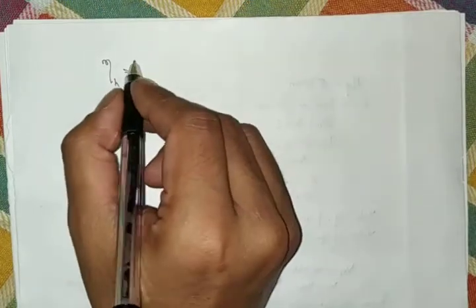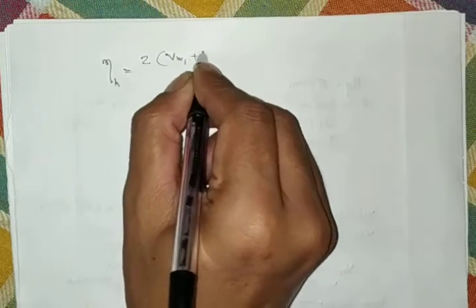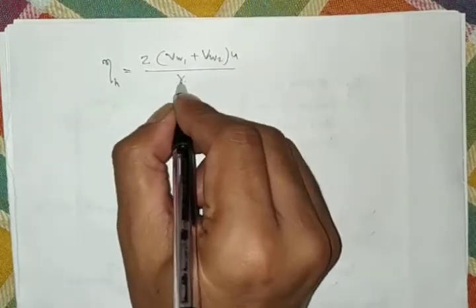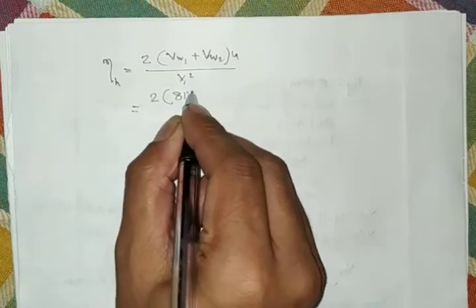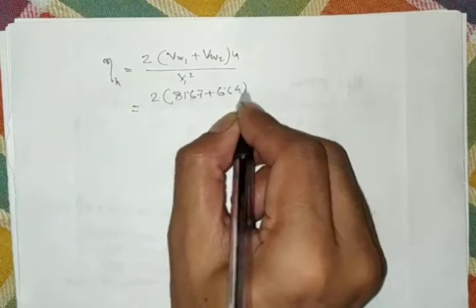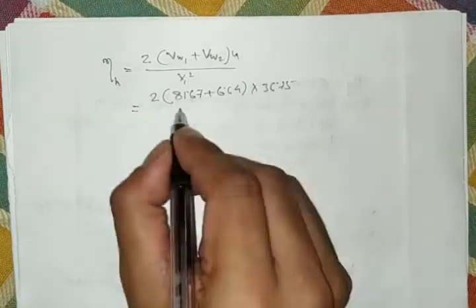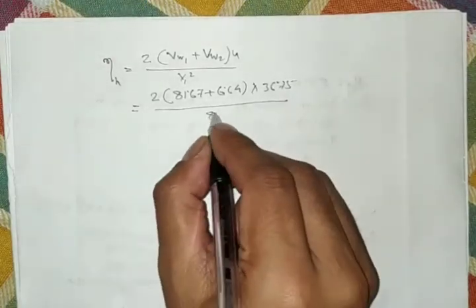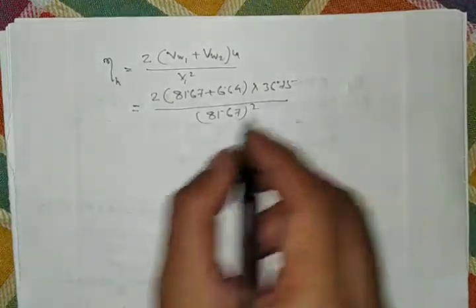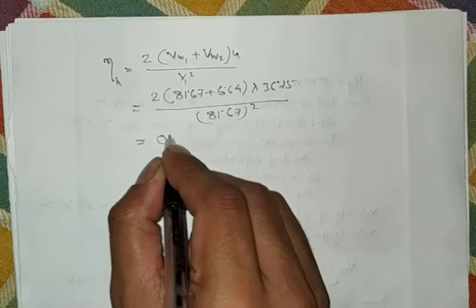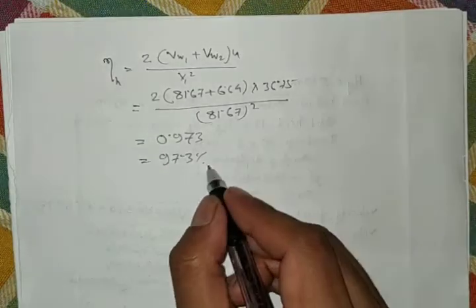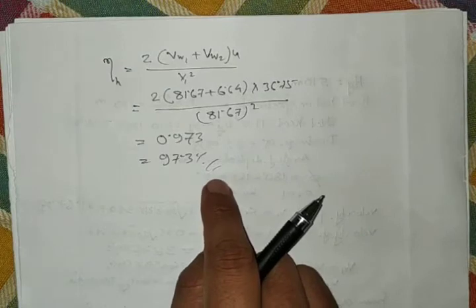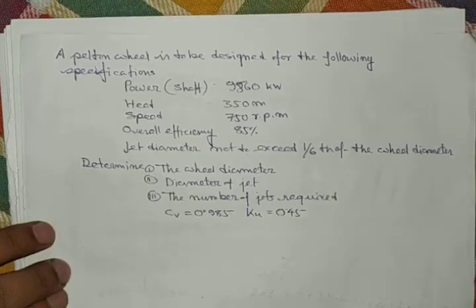Hydraulic efficiency = 2(Vw1 + Vw2) × u / V1² = 2(81.67 + 6.64) × 36.75 / (81.67²) ≈ 0.973, or 97.3%. This is the hydraulic efficiency for this problem.